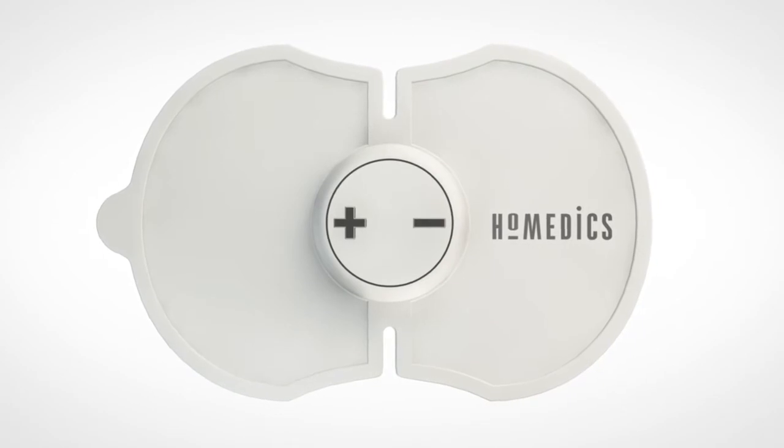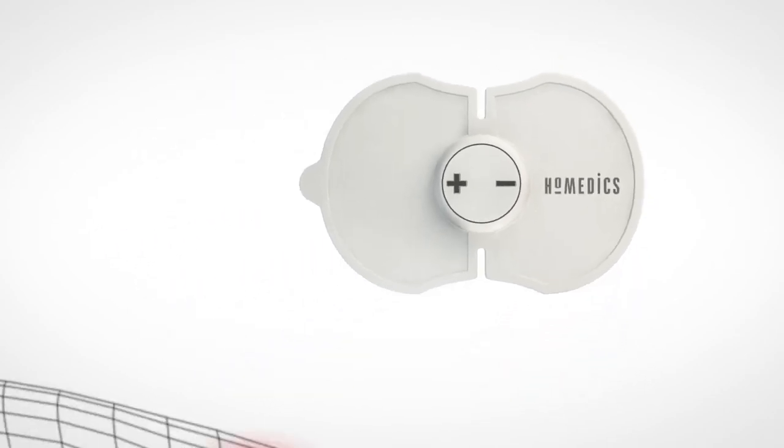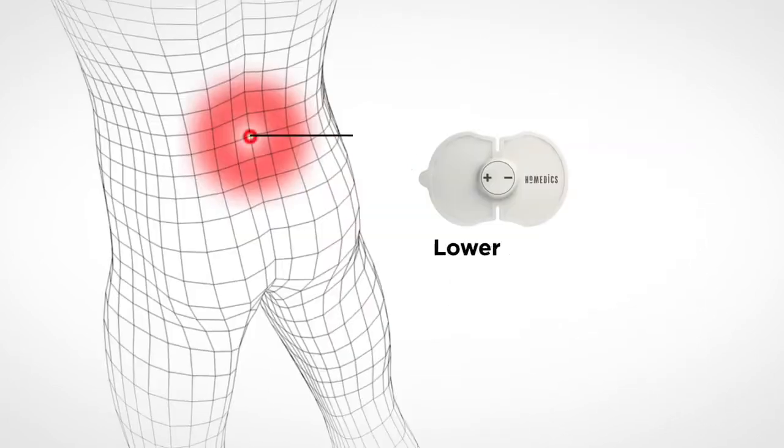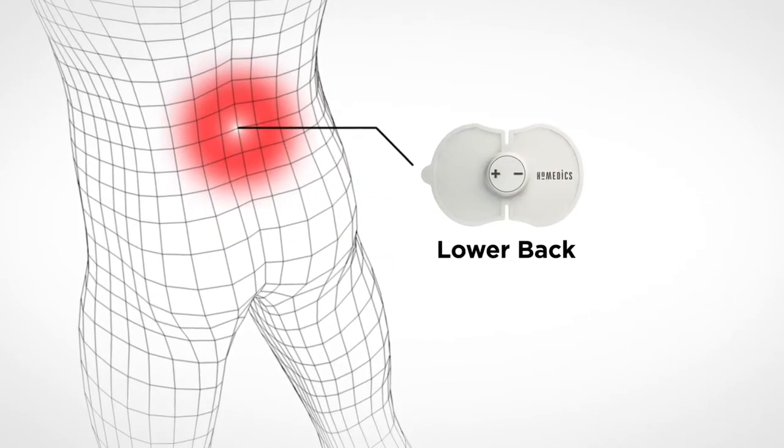Using your Rapid Relief electronic pain relief pad is simple. Place the device on the area of your arm, leg, or lower back where you're experiencing pain or discomfort.